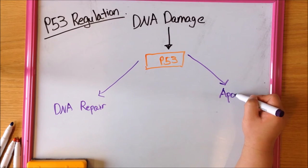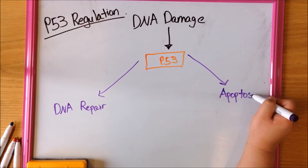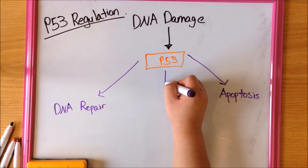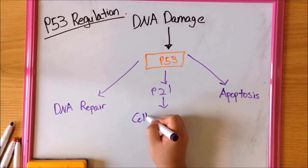However, if the DNA damage cannot be repaired, P53 initiates apoptosis, a programmed cell death. Of particular interest is its role in cell cycle arrest.